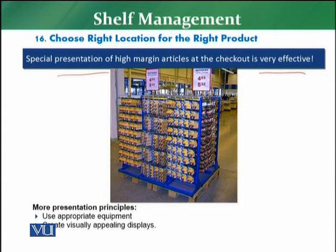The special presentation and secondary displays are done for products, especially at the checkouts where there is a billing counter. You need to place the high-margin articles there, because if the customers have picked them, you will be able to turn that customer into a buying customer for that particular article. Research has observed that this is the ideal method of encouraging customers to buy products which are normally not in their planned list or routine grocery buying — but once they see the special presentation and it attracts them to buy that product, it will ultimately bring more profitability for the retailer.